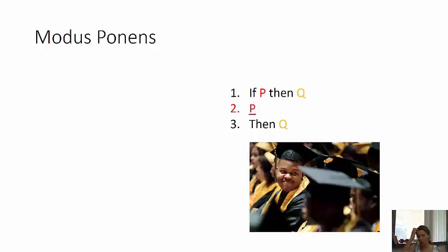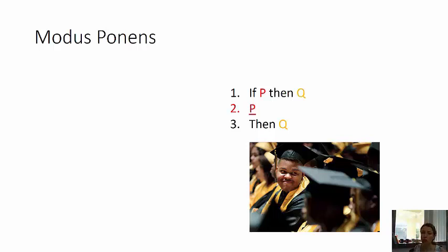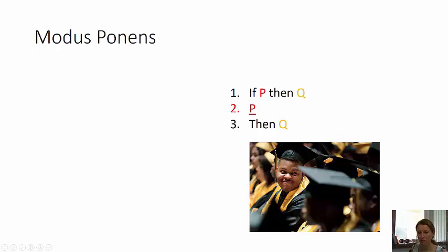Here's modus ponens. Modus ponens is: if P then Q, P, therefore Q. It's really simple and straightforward — you're just saying the same thing twice in a row: if P then Q, P, therefore Q.